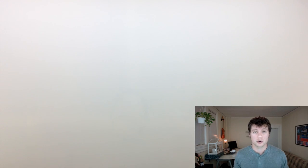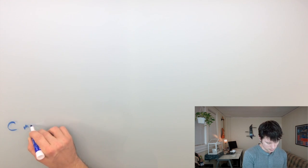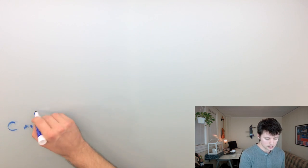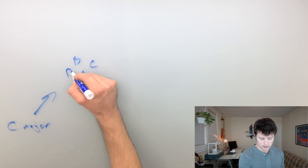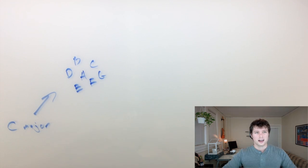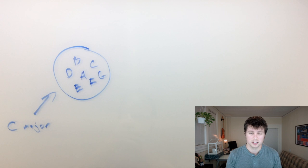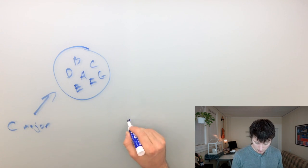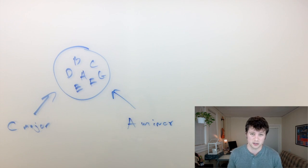Here's how to start thinking about it. If I say I wrote a song in the key of C major, I'm telling you that I wrote a song that used these seven notes: A, B, C, D, E, F, G. If I tell you I wrote a song in the key of A minor, I'm telling you that I wrote a song using those exact same seven notes.